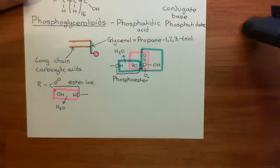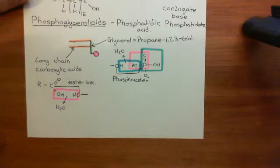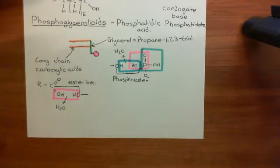What we now want to see is what those phospholipase C enzymes are going to do. They're going to act on something called phosphatidylinositol-4,5-bisphosphate, which is going to be a phosphoglycerolipid, and we're having a discussion of phosphoglycerolipids to understand its structure.